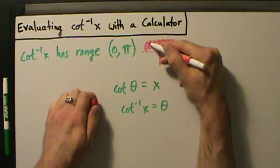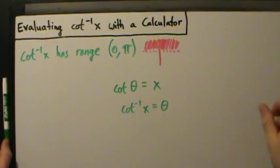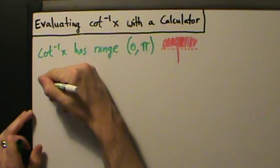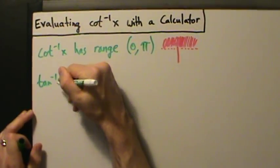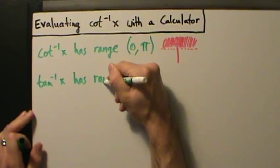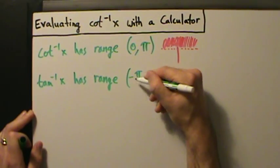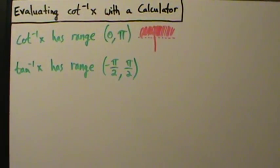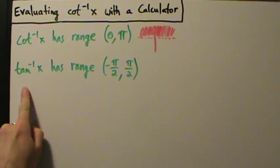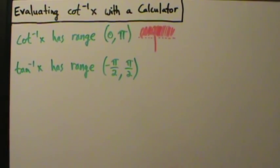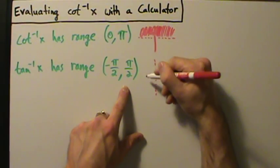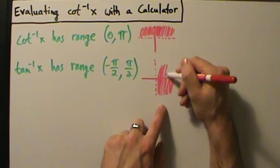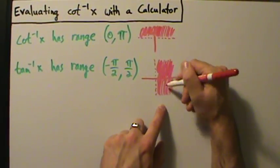Now what about the inverse tangent? The inverse tangent of x has range negative π/2 to π/2. If we interpret this as an angle and graph it, that's going to look like this: from negative π/2 up to 0 and then 0 to positive π/2.